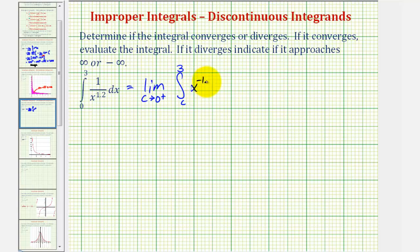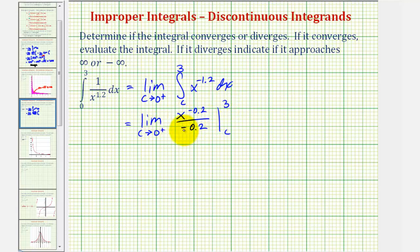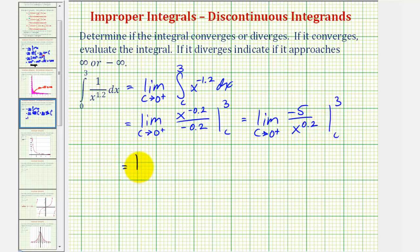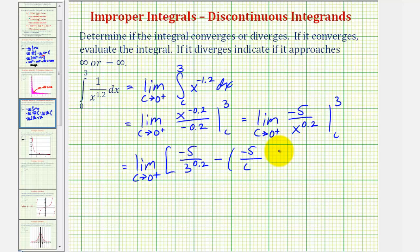Let's write the integrand as x to the power of negative 1.2. Adding one to the exponent, we would have x to the power of negative 0.2 divided by negative 0.2. To simplify, dividing by negative two-tenths or negative one-fifth is the same as multiplying by negative five. So we can write this as the limit as c approaches zero from the right of negative five times x to the power of negative 0.2, which we move to the denominator: negative five divided by x to the power of 0.2. Evaluating from c to three gives negative five divided by three to the 0.2 minus negative five divided by c to the 0.2.